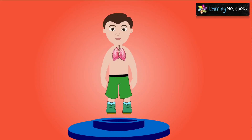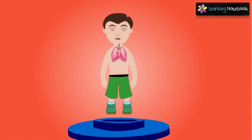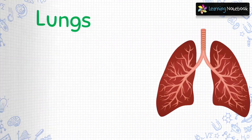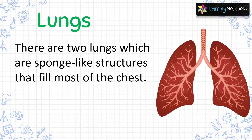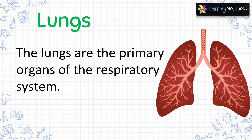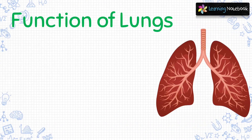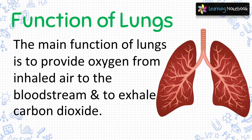The next internal organ are lungs. There are two lungs which are sponge-like structures and they fill most of our chest. The lungs are the primary organs of the respiratory system. The main function of lungs is to provide oxygen from inhaled air to the bloodstream and to exhale carbon dioxide.